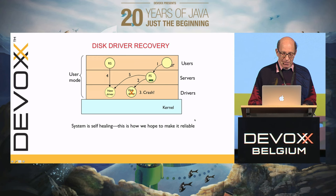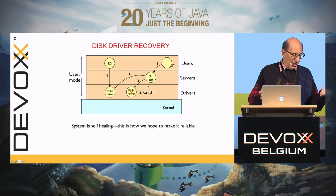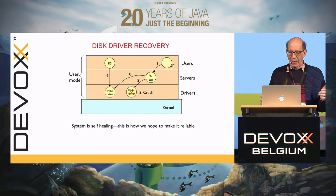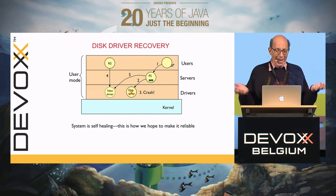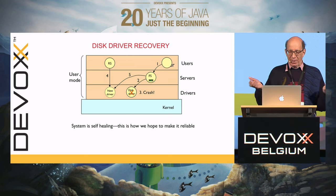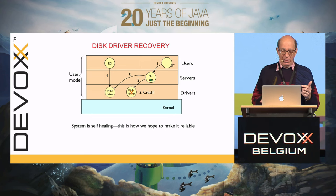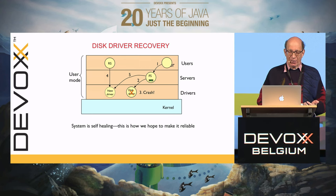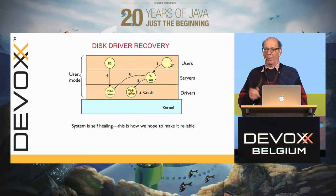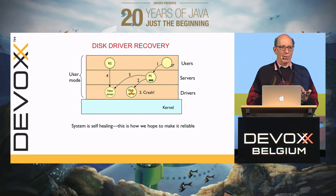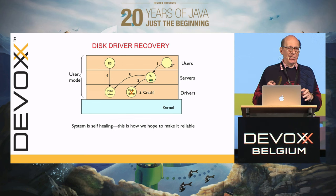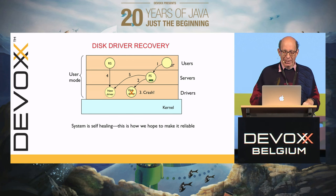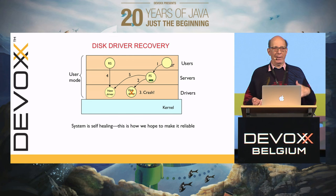Here's a recovery example. The user sends a message to the file server saying go read a block. While the file server looks in its cache, the disk driver dereferences a null pointer and crashes. The reincarnation server hears that the disk driver died, goes and starts a new disk driver, and sends a message to the file server saying there's a problem with the disk driver — here's a new one. The file server, which has to remember what it was doing, looks up its table and resends the message to the new disk driver. If that one crashes too, the process can repeat indefinitely.